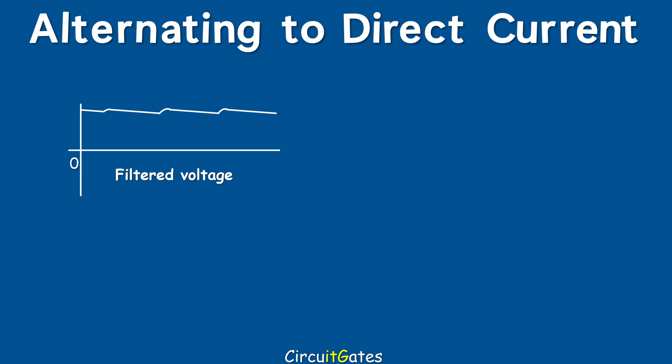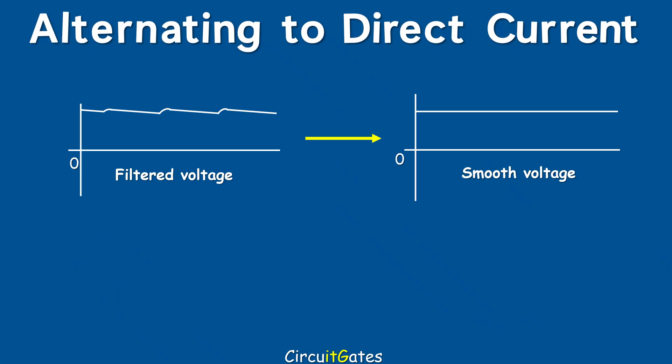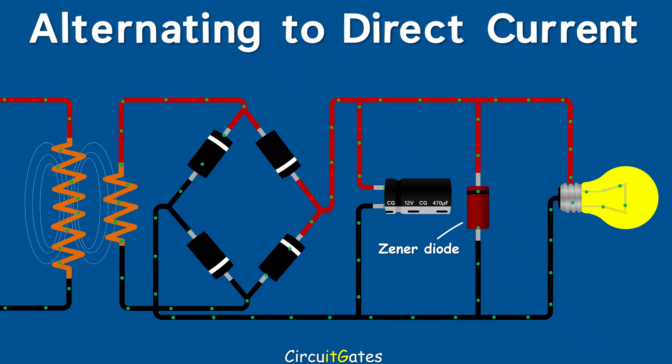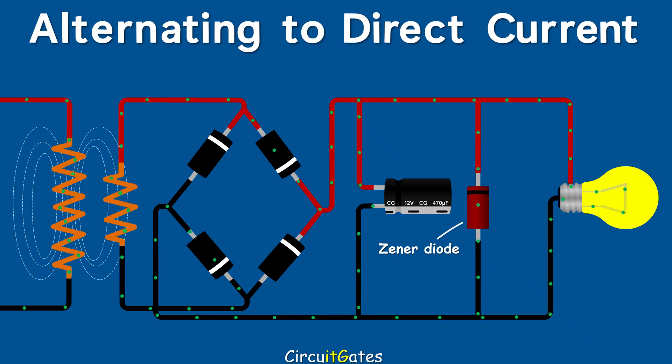After filtering the voltage, the last stage is regulation. At regulation, we are maintaining a constant or smooth voltage across the load from a nearly smooth filtered voltage. Zener diodes and transistors are used at voltage regulation. In this video, we are going to use a Zener diode. For a Zener diode to regulate voltage across the load, we connect it in reverse to the DC input voltage and in parallel with the load.